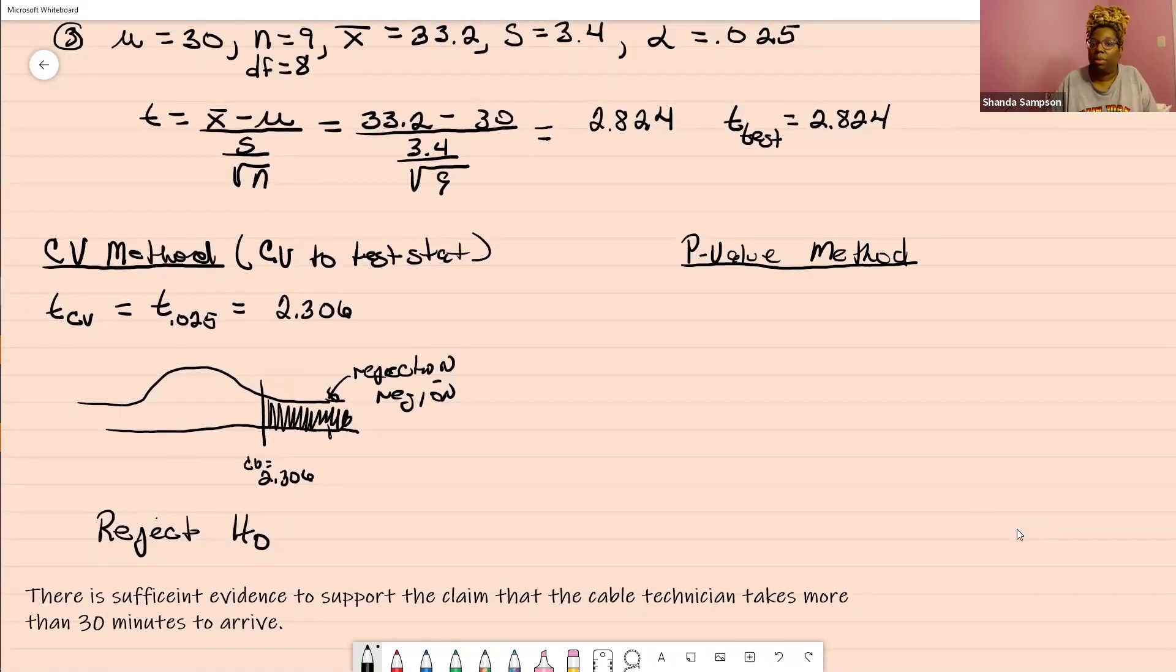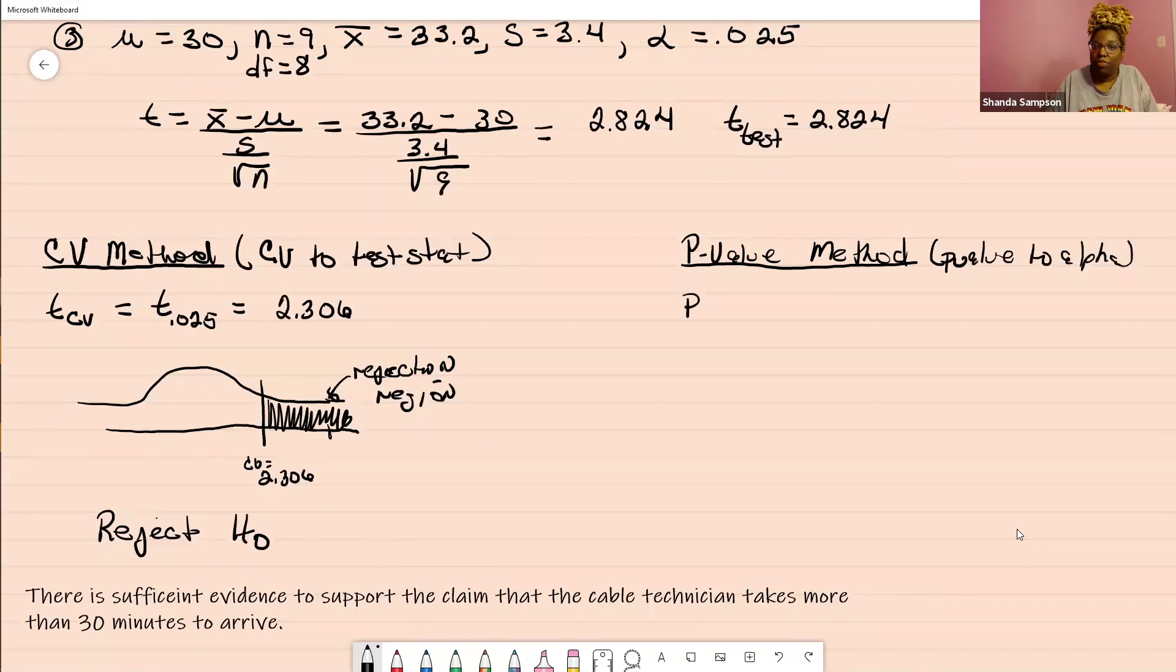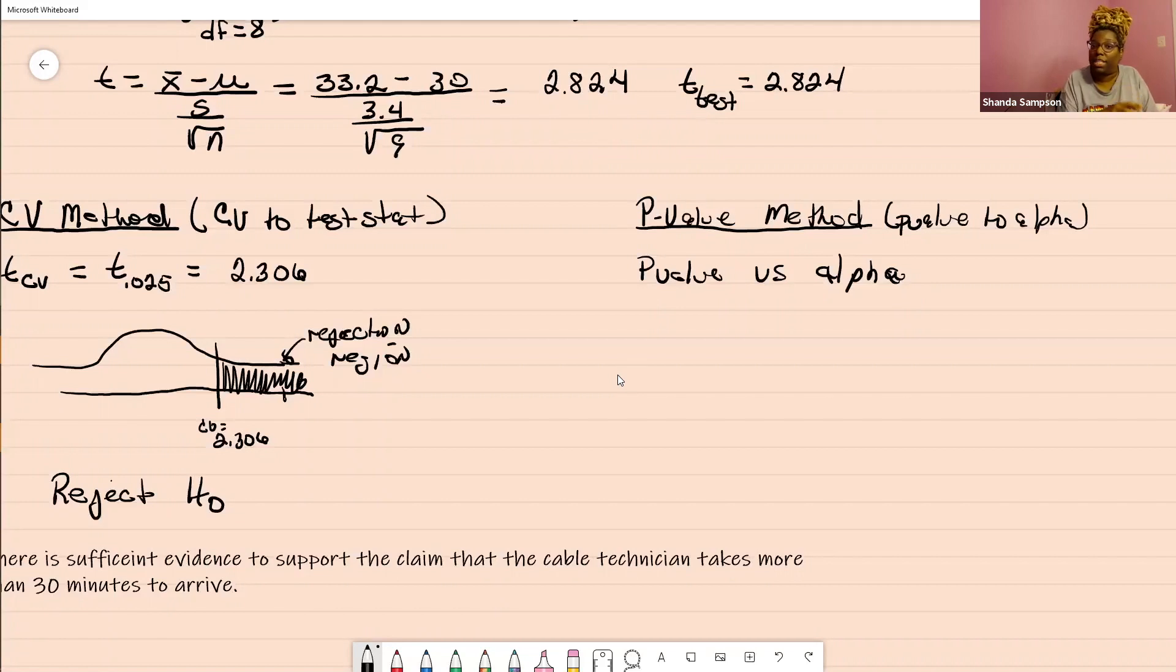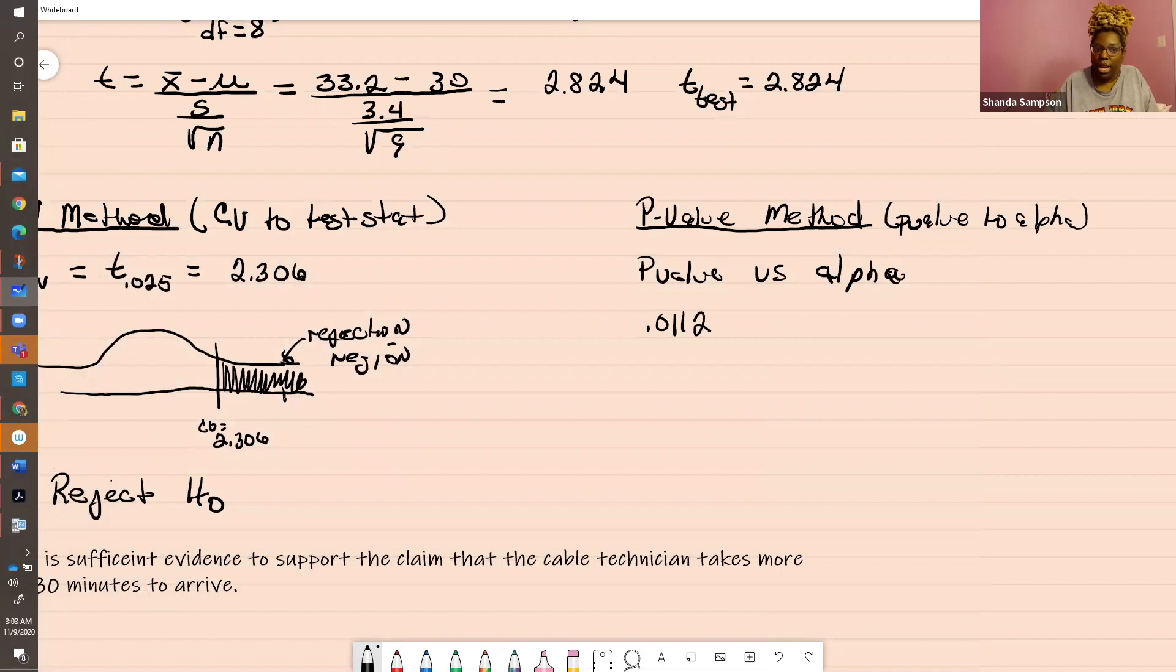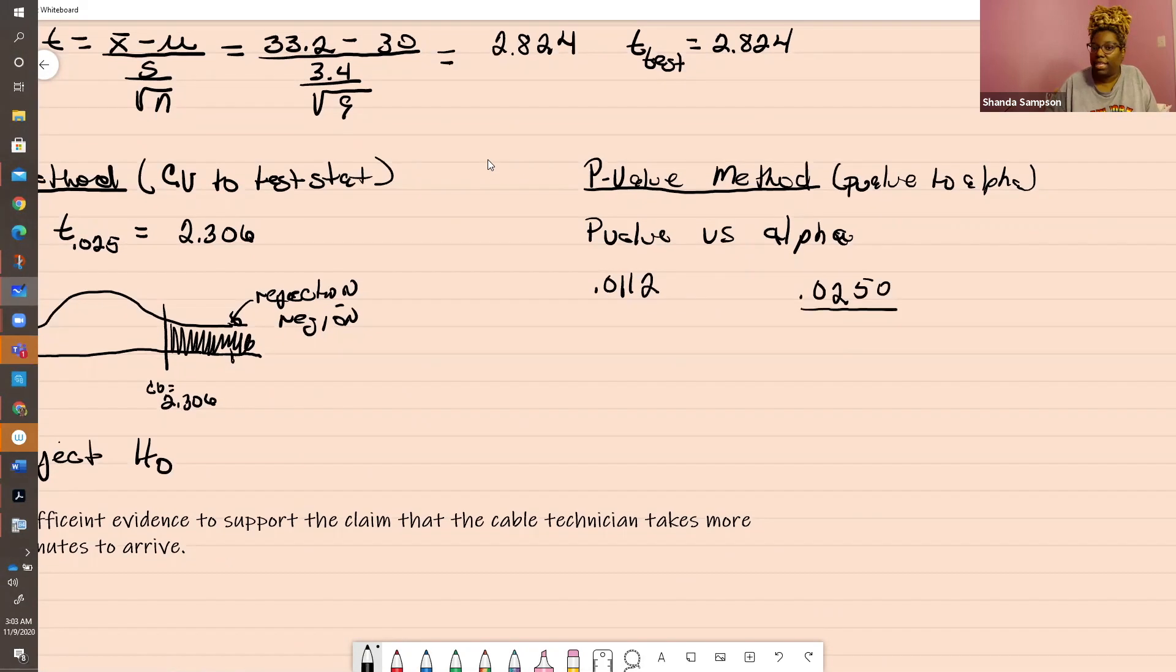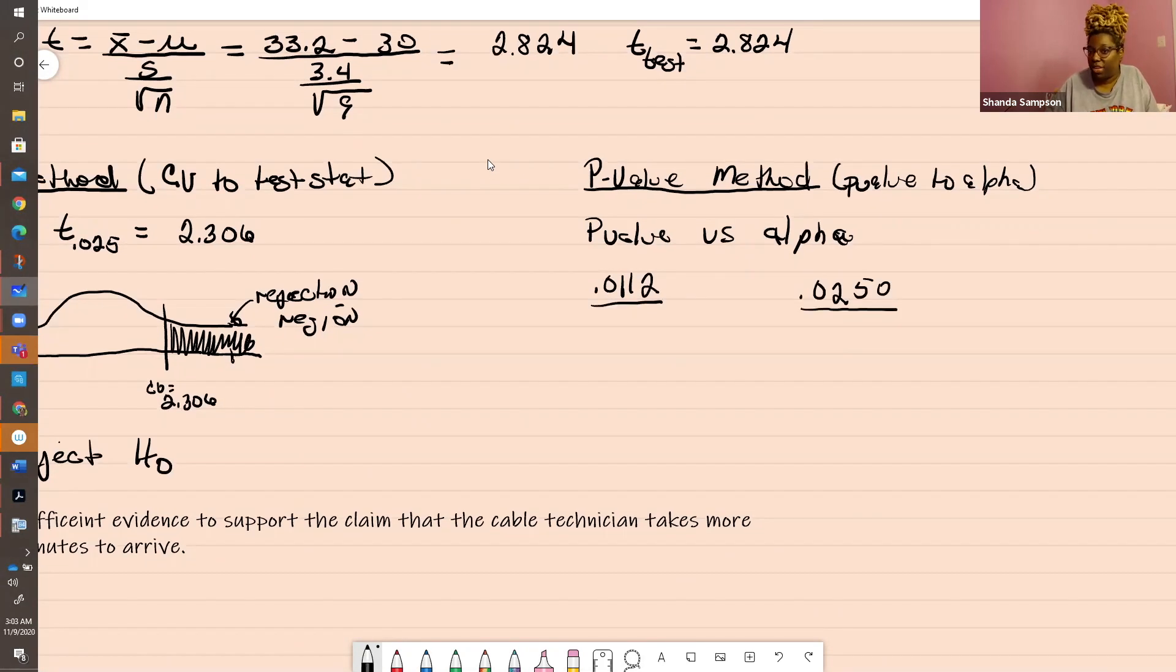Now we're going to do the p-value method. The p-value method compares the p-value to alpha. The only way to get a p-value for a t-test is off of a calculator or a software program. When you did your test, it gave you a p-value. Here's the p-value right here, 0.0112. And our alpha was 0.025. So 112 is less than 250. When the p-value is low, the hoe must go.